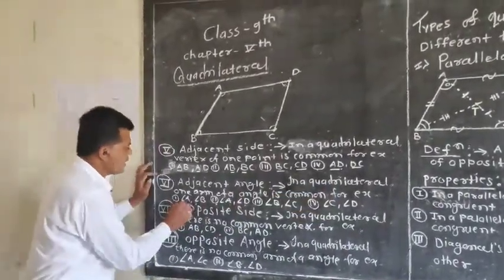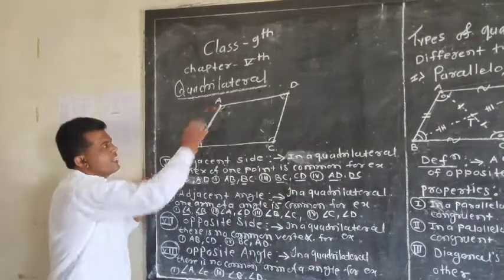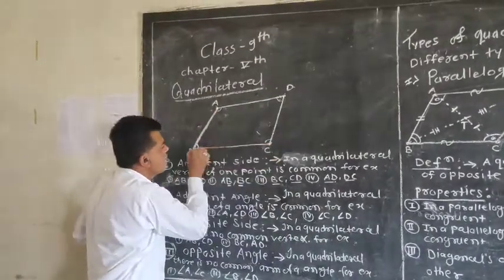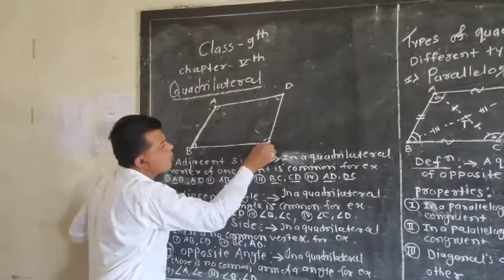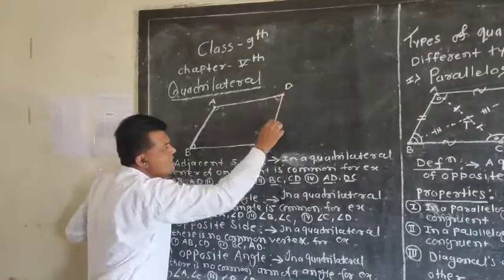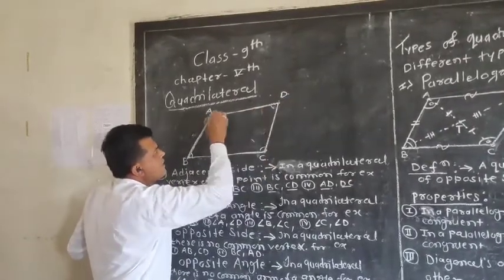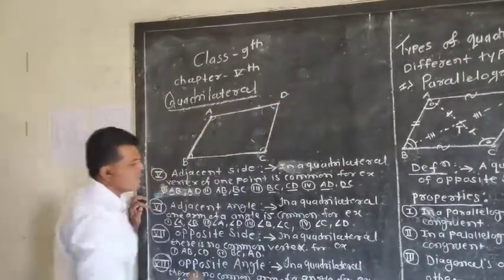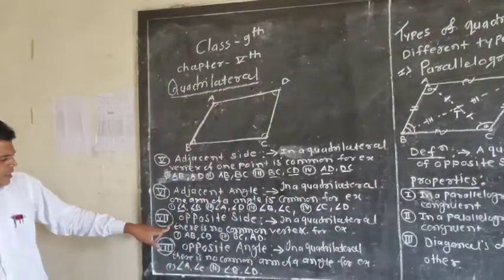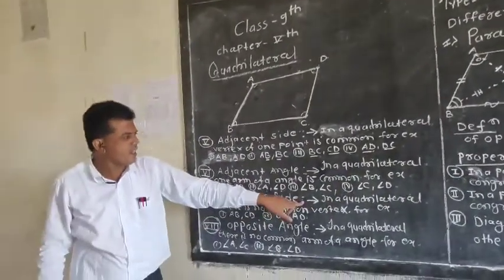For example: angle A and angle B share AB as a common arm. Angle B and angle C share BC as their common arm. Angle C and angle D share CD as their common arm. Angle D and angle A share AD as their common arm.